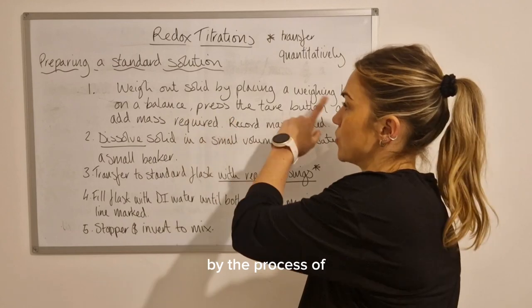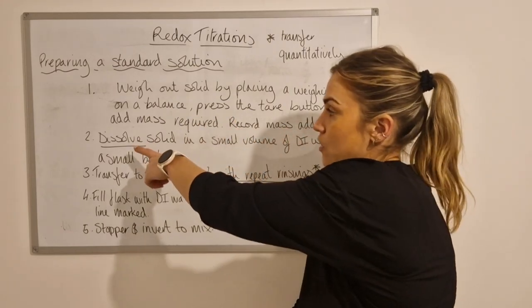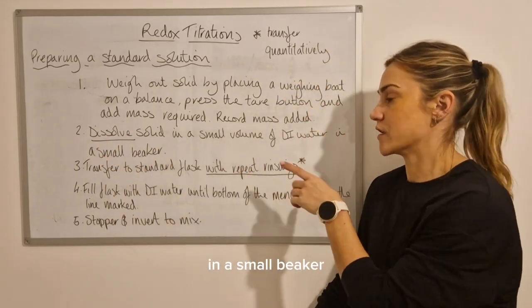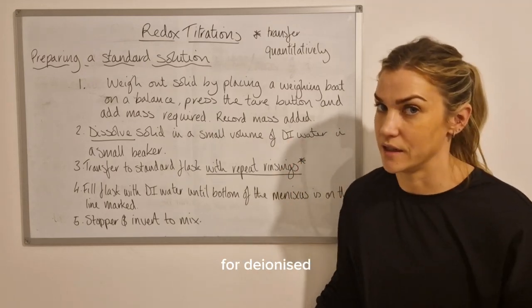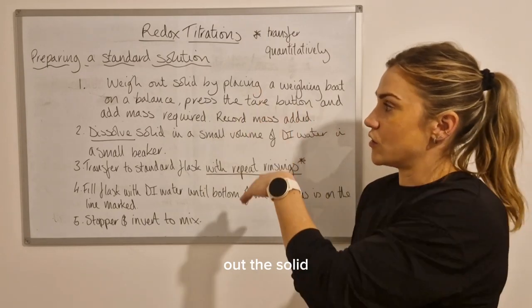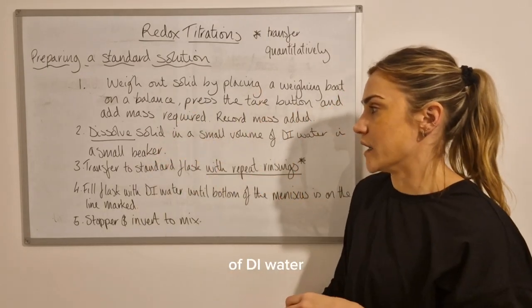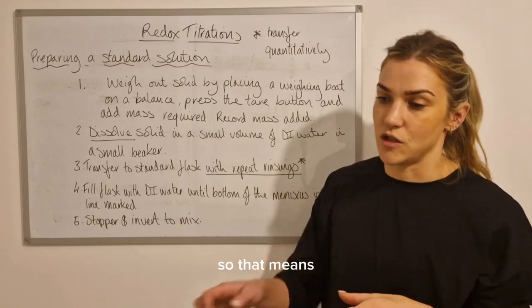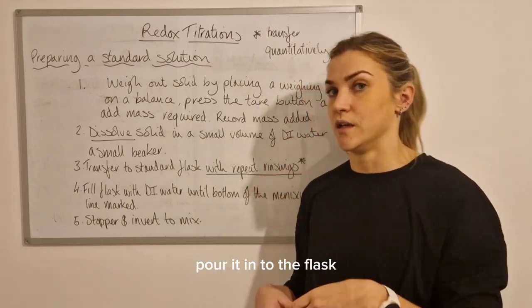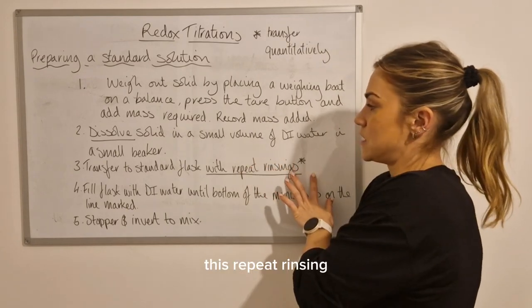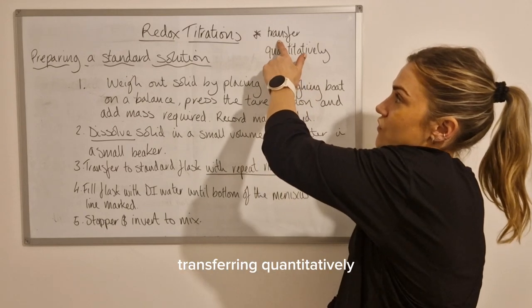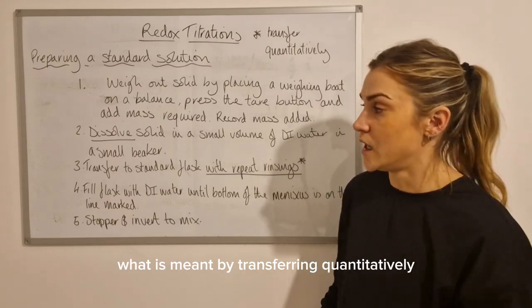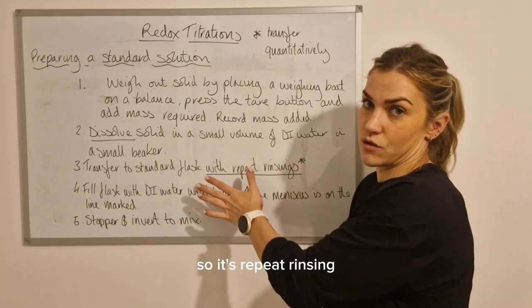Once you've weighed out your solid by the process of using the tare button, you would dissolve - and the key word here is dissolve - if you dissolve the solid in a small volume of deionized water in a small beaker, then you would transfer that into the standard flask with repeat rinsings. So that means you rinse out the beaker, pour it in, rinse out the beaker, pour it into the flask numerous times. This repeat rinsing process is also known as transferring quantitatively, and sometimes they will ask you in the exam what is meant by transferring quantitatively - it just means transferring with repeat rinsings, so it's the repeat rinsings that's the key bit.